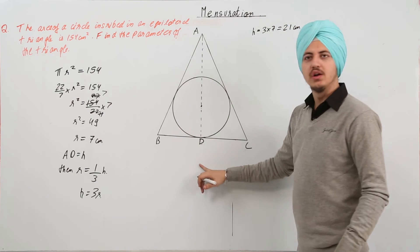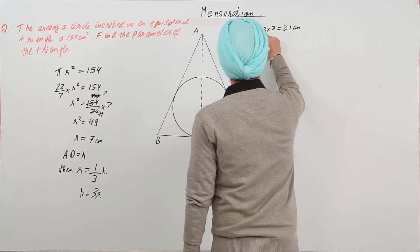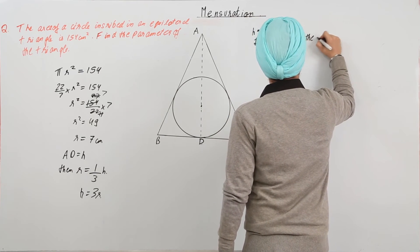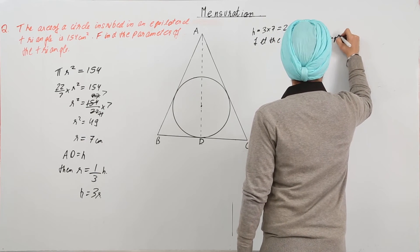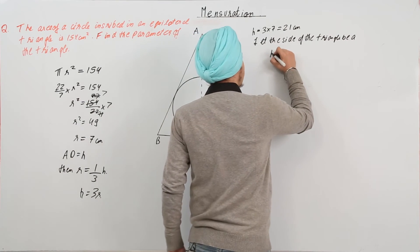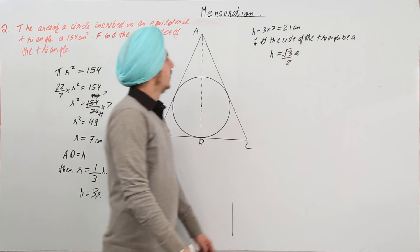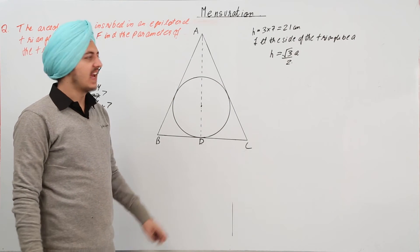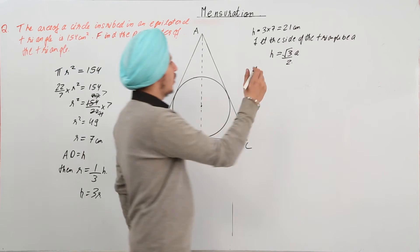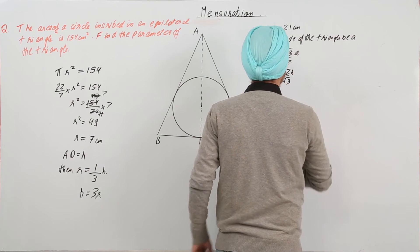Now we have the height of the equilateral triangle and we need to find its side. Let the side of the triangle be A. We know the formula h = (√3 × A) / 2, where A is the side and h is the height of the equilateral triangle. From here, A = 2h / √3.